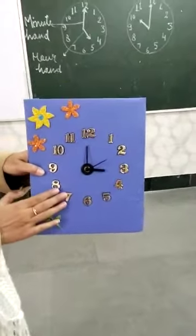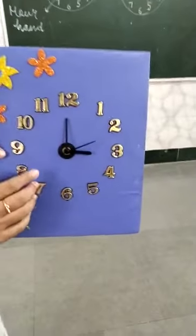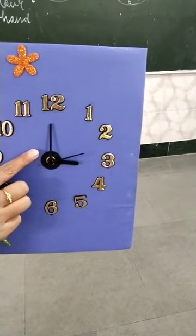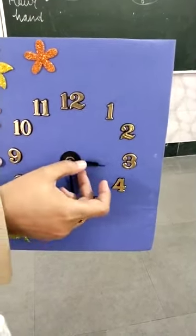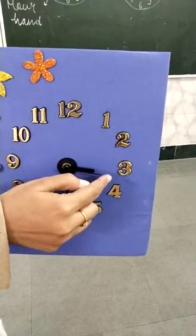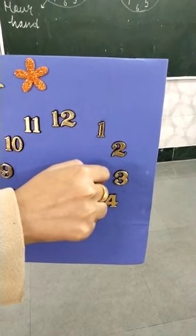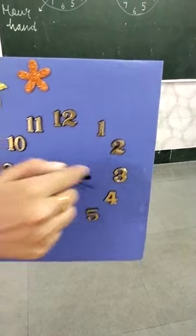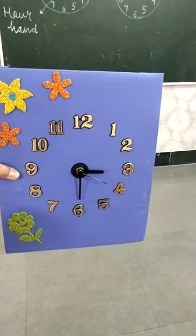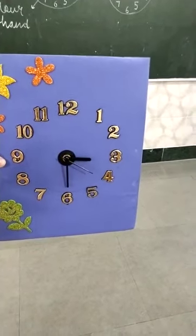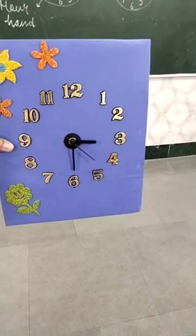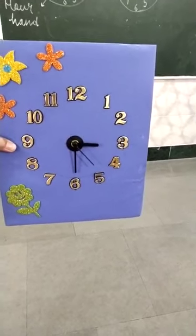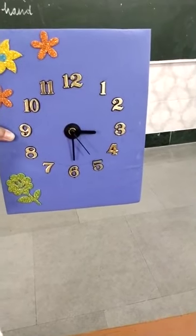Can you see in the clock there are three hands? This is called the minute hand. Then this is the second hand. And then this is the hour hand. So we have three hands in the clock: minute hand, hour hand, and second hand.